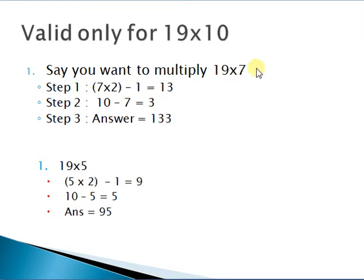Whatever the number you want to multiply, you need to multiply that number into 2, subtract 1, and get one answer. Then the same number from which you are multiplying, you need to subtract from 10 and get the answer. The last step would be put this answer over here.